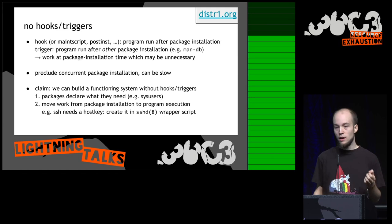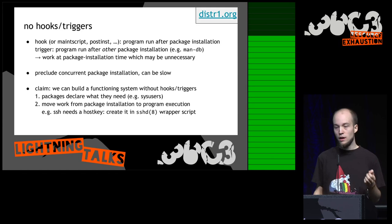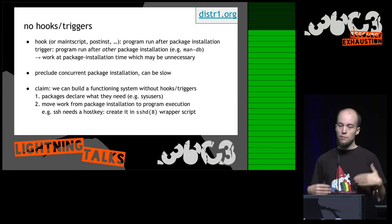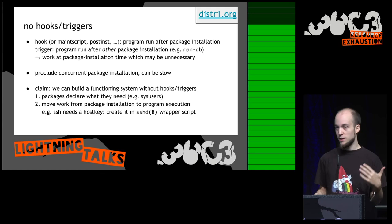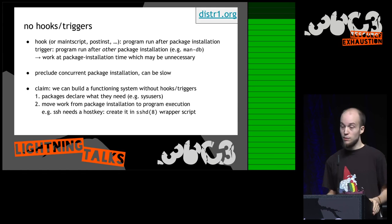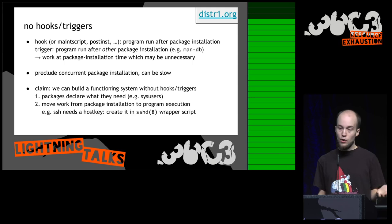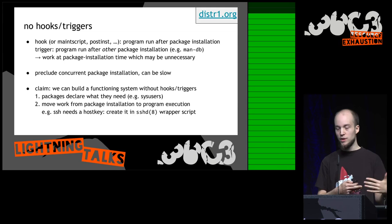Furthermore, distri has no hooks or triggers. A hook (also called a maintainer script or post-installation script) is a program run after a package is installed. A trigger is similar but runs after some other package installs. For example, the man package in Debian builds a full-text search database of all man pages whenever you install any package with a man page — which is almost always, and most people never even use this. Having hooks precludes concurrent package installation and they can be slow since nobody checks what maintainers ship.